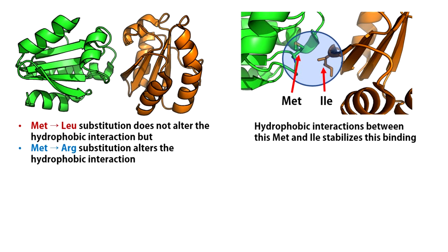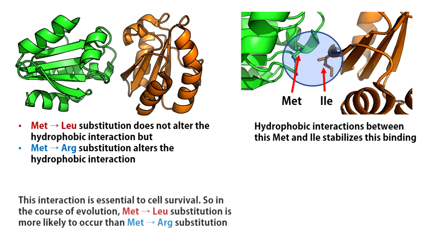But a methionine to arginine substitution will disrupt this interaction as arginine is charged. This means to maintain this interaction, in the course of evolution, methionine to leucine substitution is more likely to occur than methionine to arginine substitution.